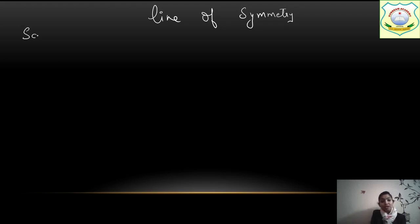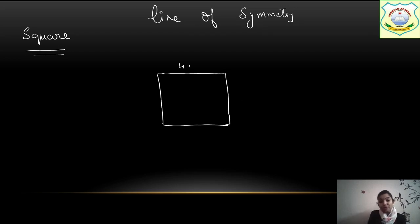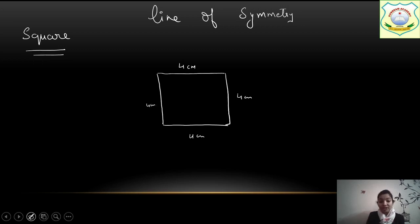This is the heading. First is your square. So first draw a square — all four sides should be equal. Don't make it like a rectangle. You can take any measurement: 4 cm. You can make 4 sides of 4 or 5 cm. Just draw it like that only. Okay?